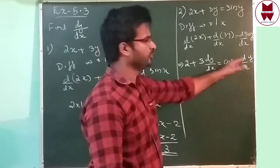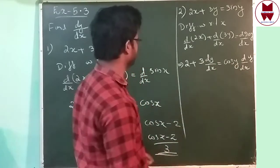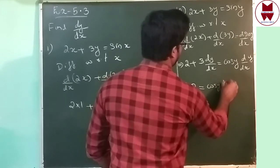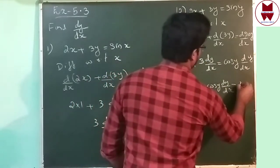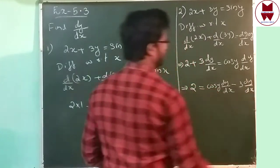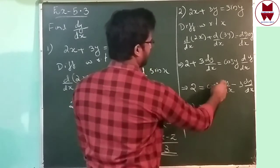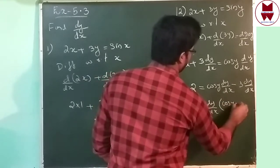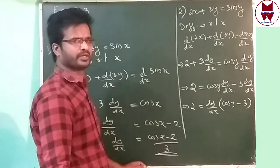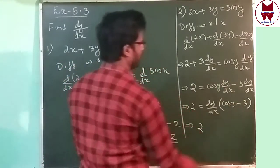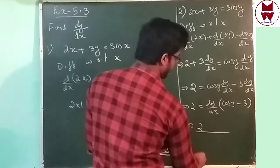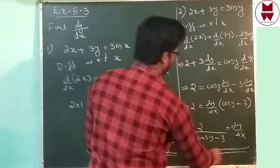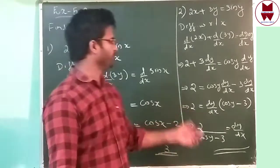Now, how many dy/dx are there? Two. We can bring all to one side. Keep 2 here. Bring 3 dy/dx to the right side. So 2 = dy/dx × (cos y − 3). Then bring (cos y − 3) to the other side, divided by it. Our answer is dy/dx = 2 / (cos y − 3).